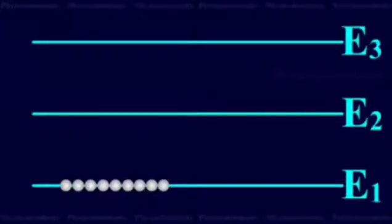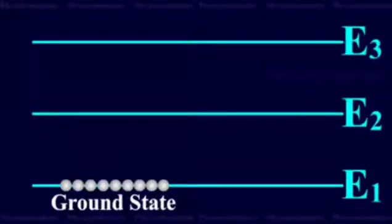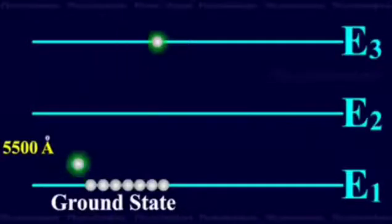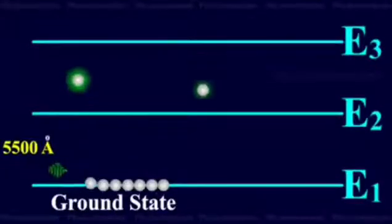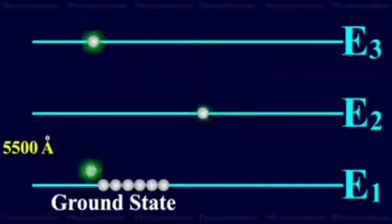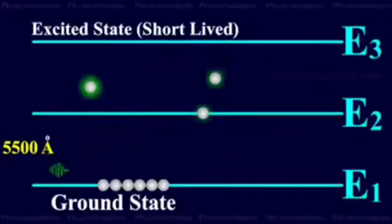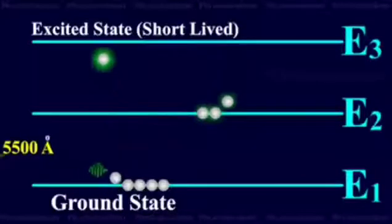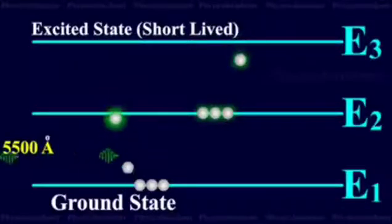In this ruby laser, the xenon flash lamp produces white light. Green light is absorbed and the chromium ions move from the ground state to the excited state E2. From there they undergo a short-lived rapid radiation-less transition, decaying down to the metastable state E3.